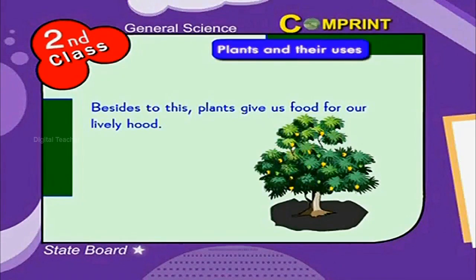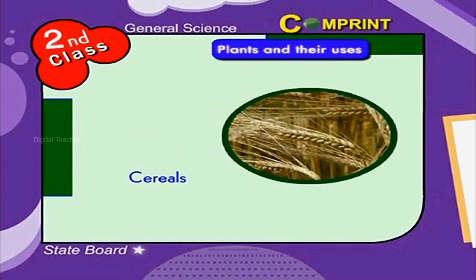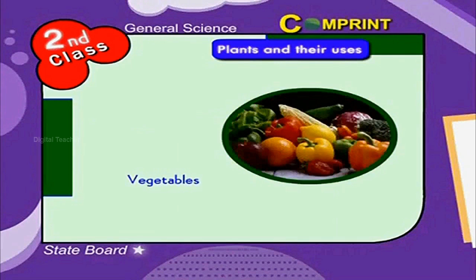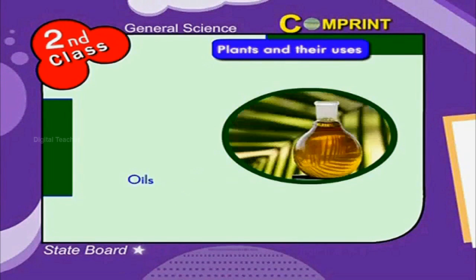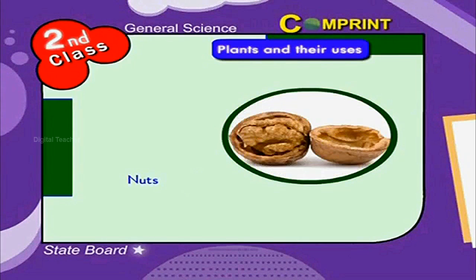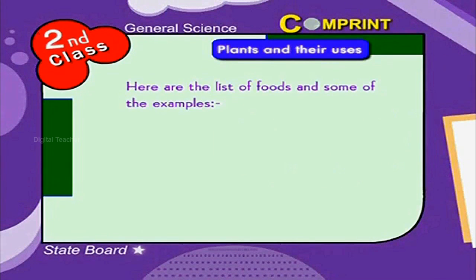Besides this, plants give us food for our livelihood. Different parts of the plants are used as food materials such as cereals, vegetables, fruits, leafy vegetables, oils, nuts and drinks. Here is the list of foods and some examples.